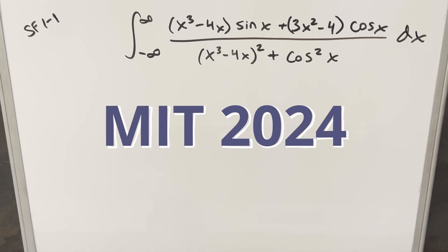Okay, we have here today a tricky integral from the MIT integration B 2024 semifinals round one problem one. We have the integral from minus infinity to infinity of x cubed minus 4x sine x plus 3x squared minus 4 times cos x over x cubed minus 4x squared plus cosine squared x dx.